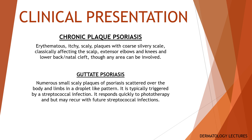Psoriasis is usually diagnosed on clinical features alone. There are several subtypes of psoriasis and two peak times of onset: early adulthood and teenage years, and later adulthood in the late 40s and 50s. Men and women are equally affected. Chronic plaque psoriasis is characterized by erythematous, itchy, scaly plaques with coarse silvery scale, classically affecting the scalp, extensor elbows and knees, lower back, and natal cleft, though any area can be involved.